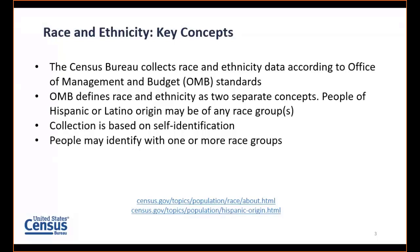As you may know, the Census Bureau collects race and ethnicity data according to Office of Management and Budget, or OMB, standards. Race and ethnicity are two separate concepts as defined by OMB. Part of our data collection is that it's based on self-identification — the Census Bureau does not tell respondents which boxes to check or what to write in free form text fields. People report their race and ethnicity according to what they identify with, and people may identify with one or more race groups.